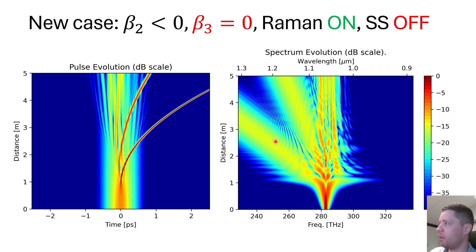And indeed in the spectral domain we can see that this first branch over here to the left or to lower frequencies must correspond to this pulse walking off right here, whereas the secondary branch you see here must correspond to the second fissioned soliton.